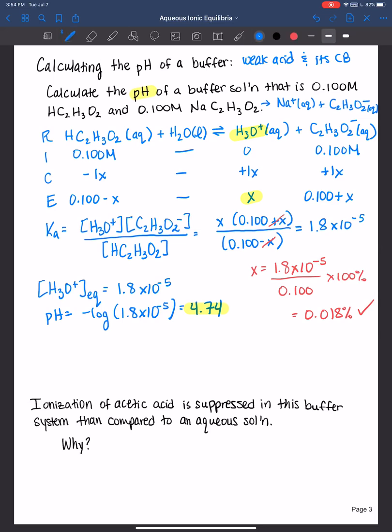then the pH of your solution would be 2.87. So the pH of acetic acid in pure water is equal to 2.87.